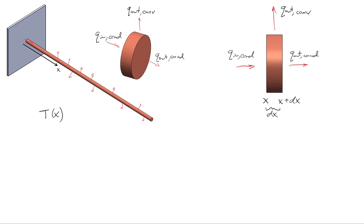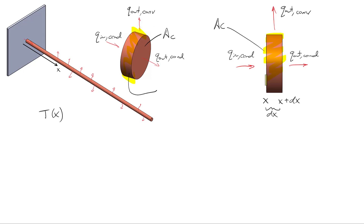For our analysis, let's focus on these two different views, and we need to define two different areas. The first area is associated with conduction — the cross-section of the extended surface — and we'll call it A sub C. The second area is the outer surface area, which we use for convection. In this case we're dealing with a cylinder, but this is independent of the particular geometry. That outer surface area is going to be the perimeter — in our case pi times diameter, but I'll just leave it as P to keep it general — times dx.